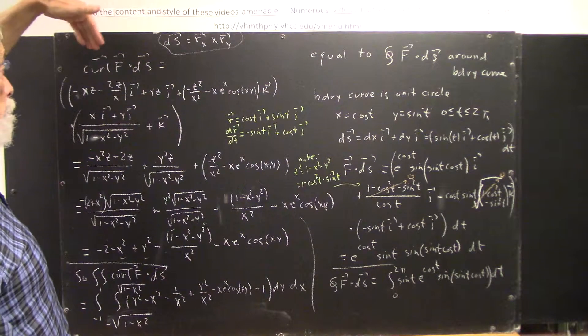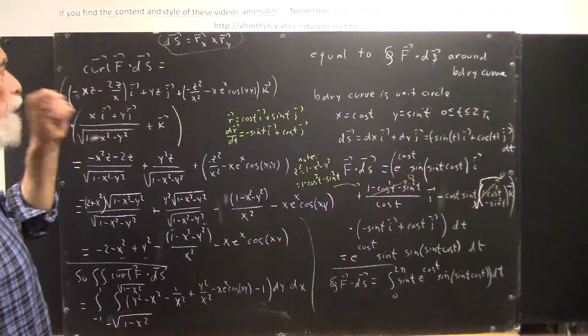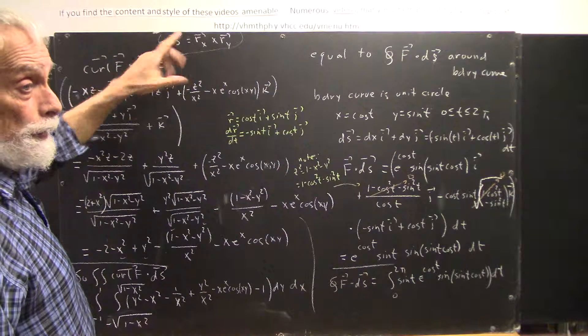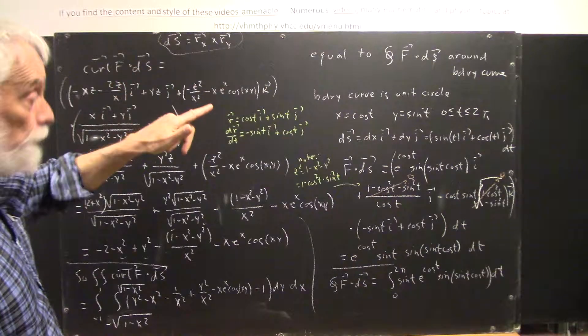Let's first calculate the curl of f dot ds, which is quite straightforward. If we've already calculated our ds, our oriented surface area increment,